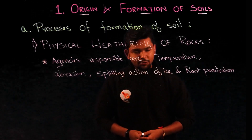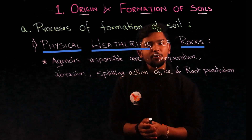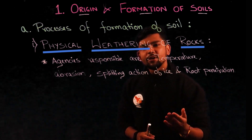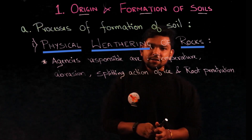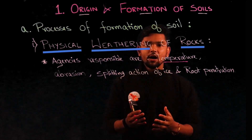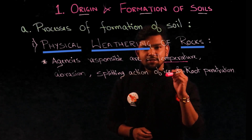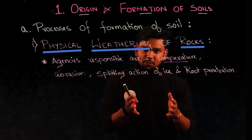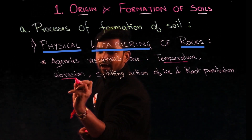The first process of formation of soil is physical weathering of rocks. The parent rock undergoes physical forces or stresses due to various agencies like temperature, abrasion, splitting action of ice, or root penetration of plants and trees. Due to variation in temperature, the parent rock tends to expand and contract, but not all parts undergo the same amount of expansion and contraction. This leads to the development of tensile stresses, which cause micro-cracks inside the rock. These micro-cracks with passage of time break the parent rock into a coarser soil.